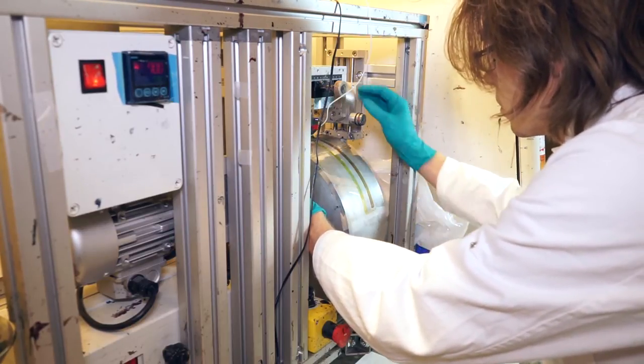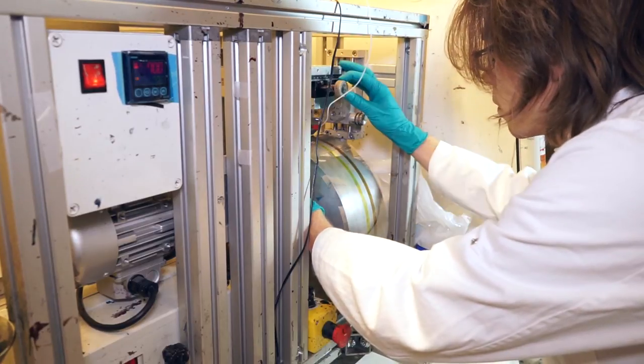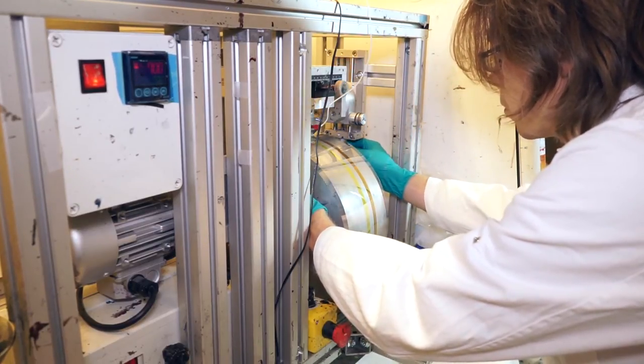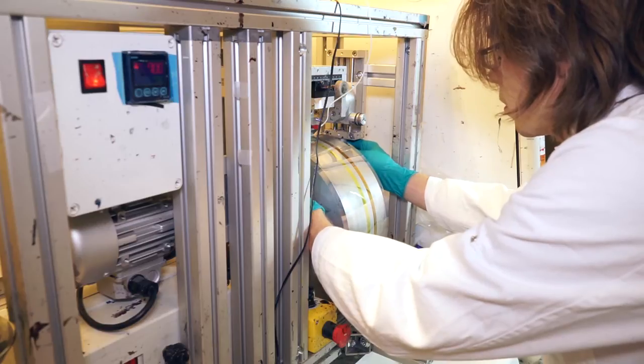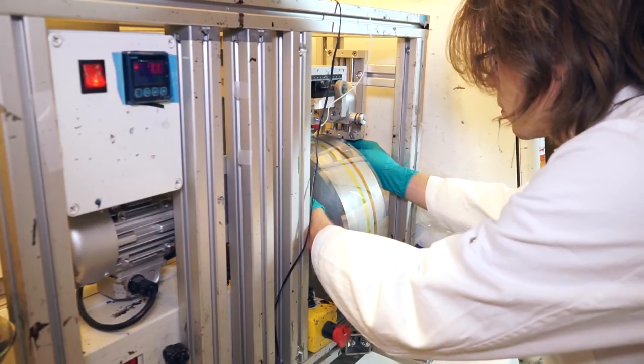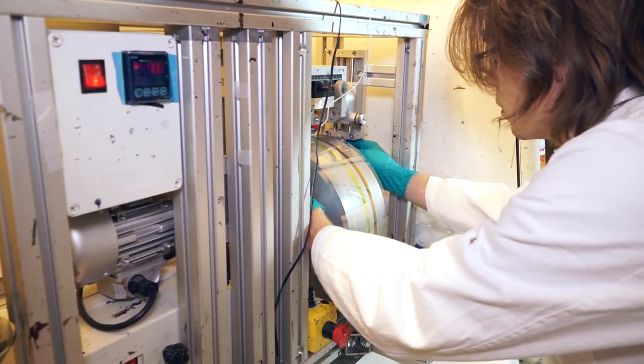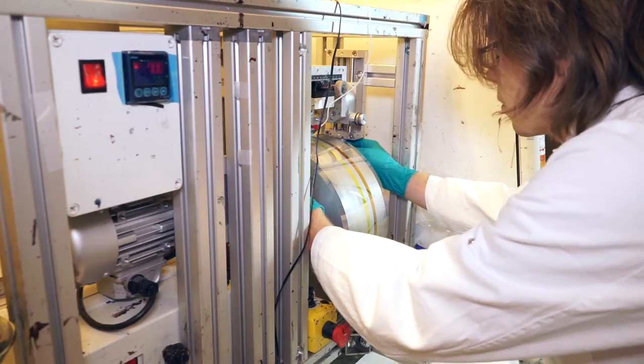This is the so-called two-step process, where we coat the two components of the perovskite in two consecutive steps of slot die coating.